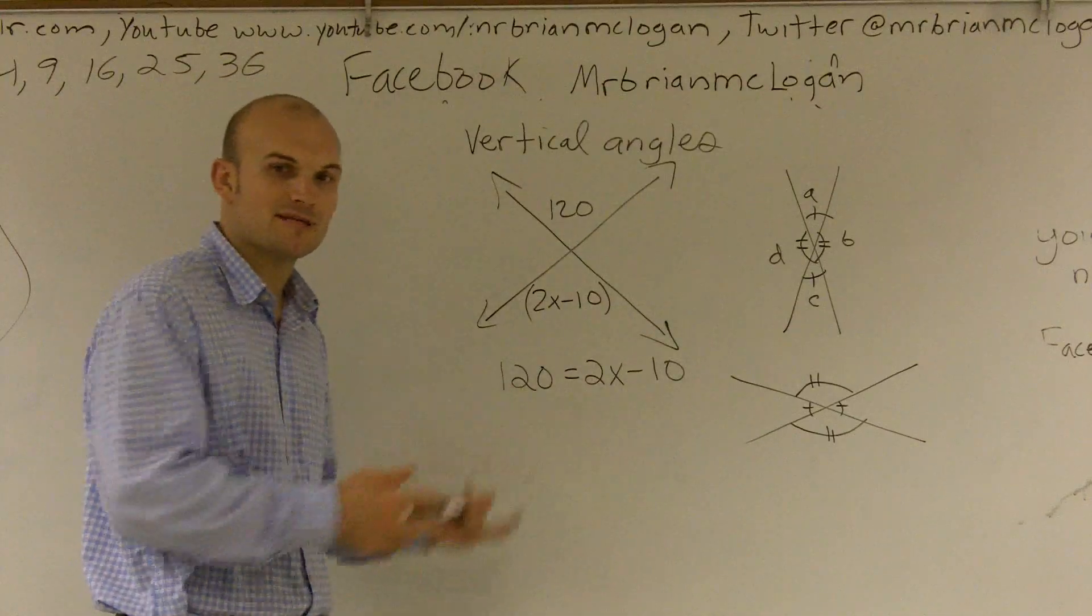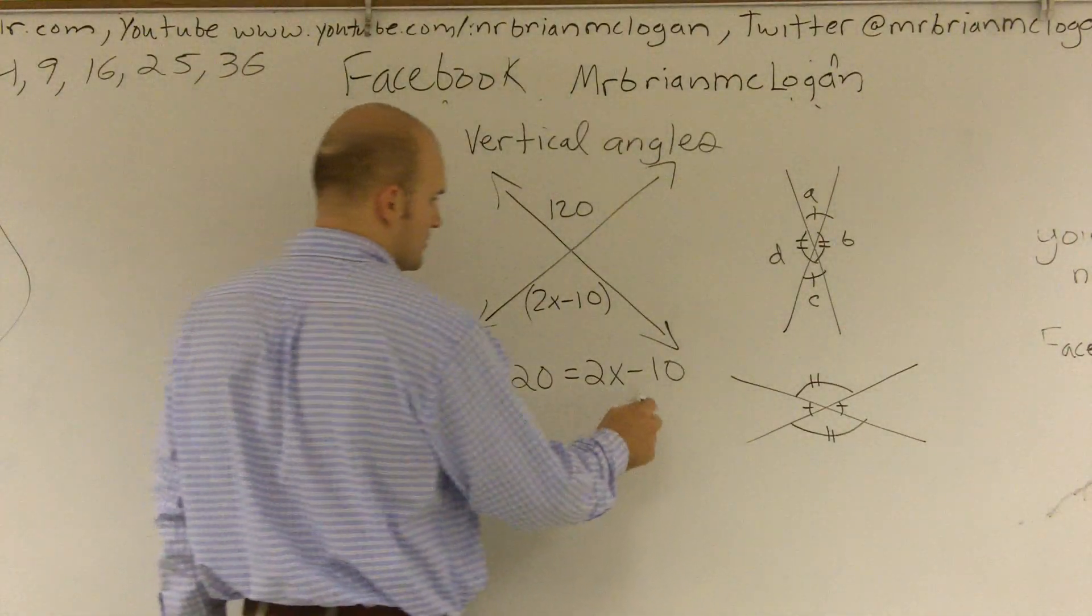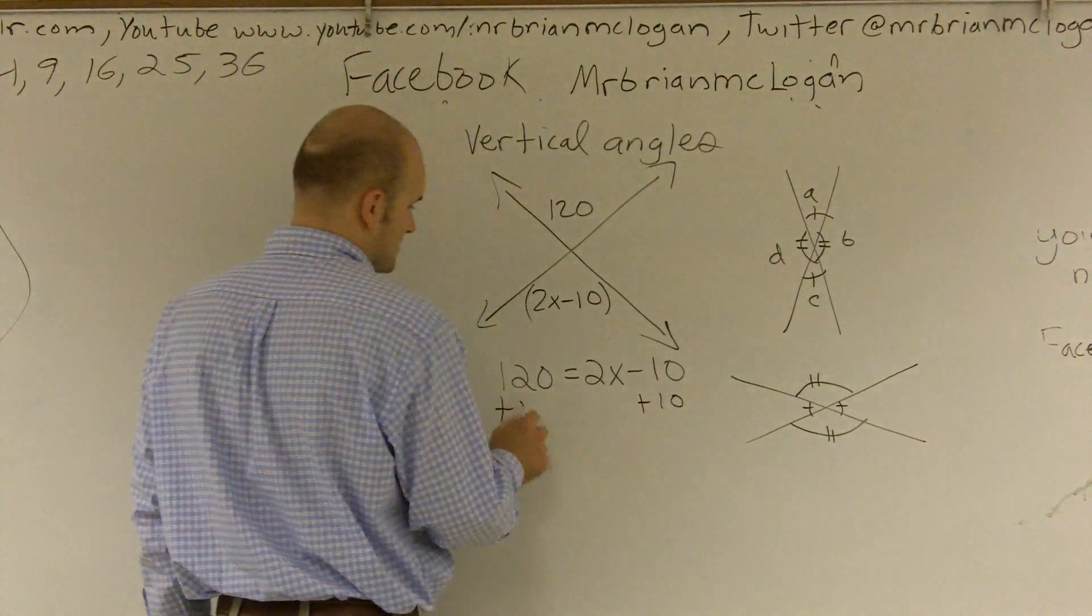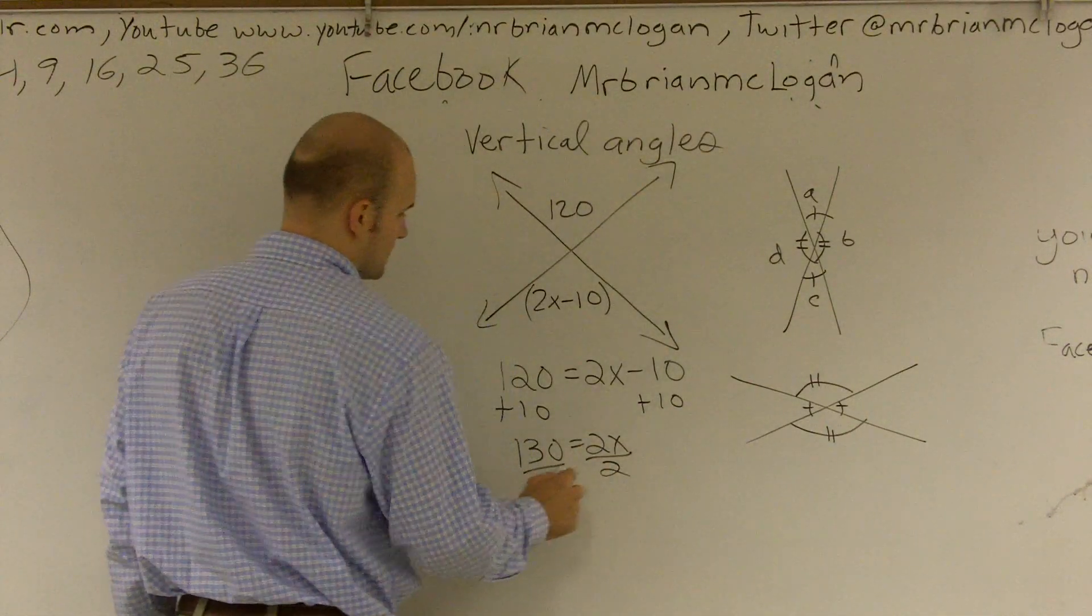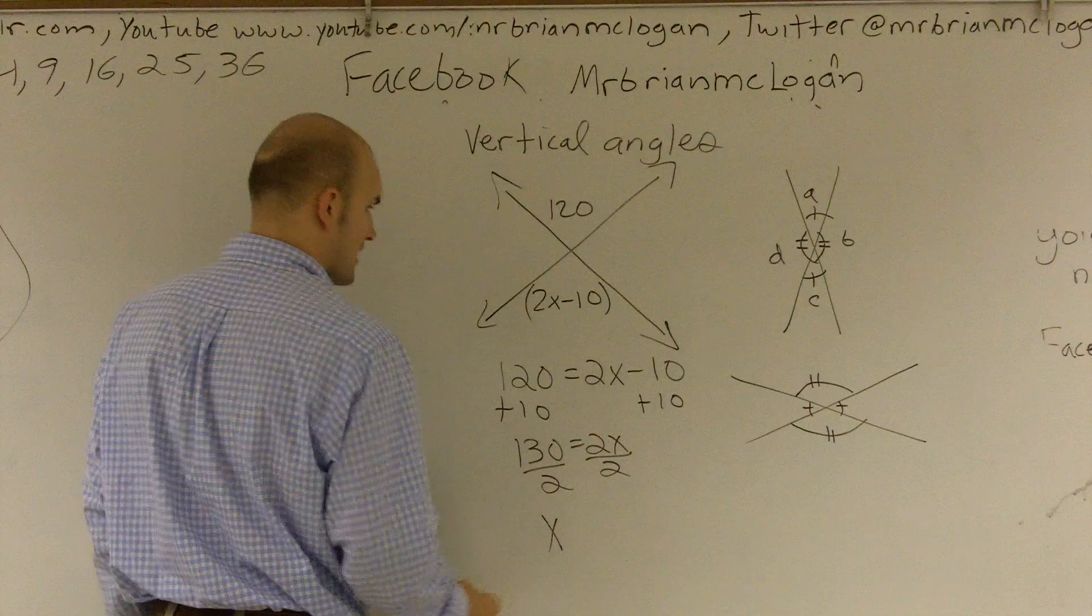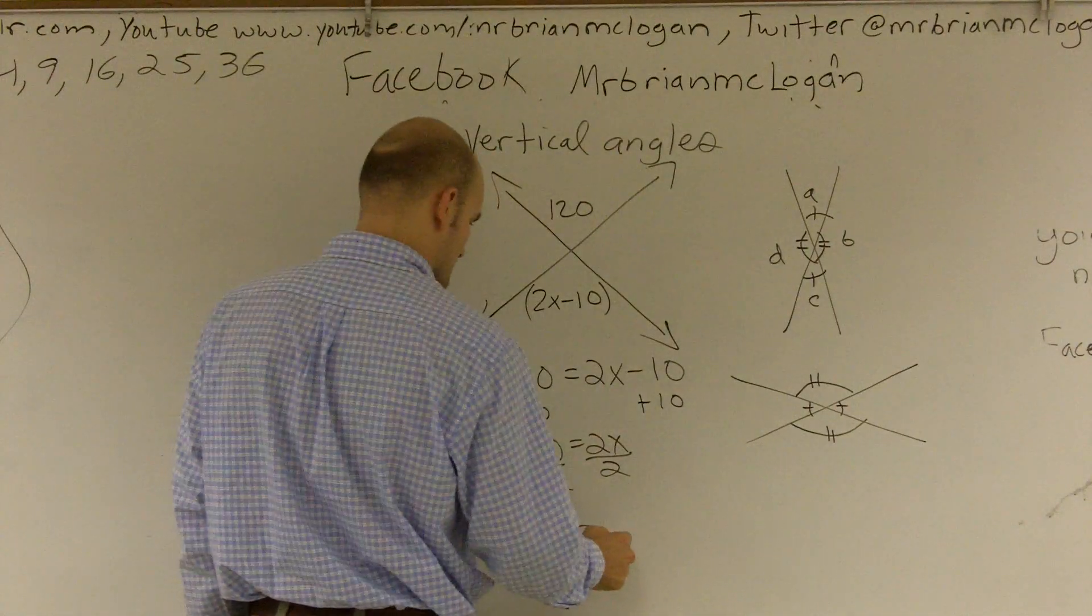Now from here, I have a two-step equation that I can solve for algebra. So I add 10 on both sides. 130 equals 2X. Divide by 2. X is going to equal 65.